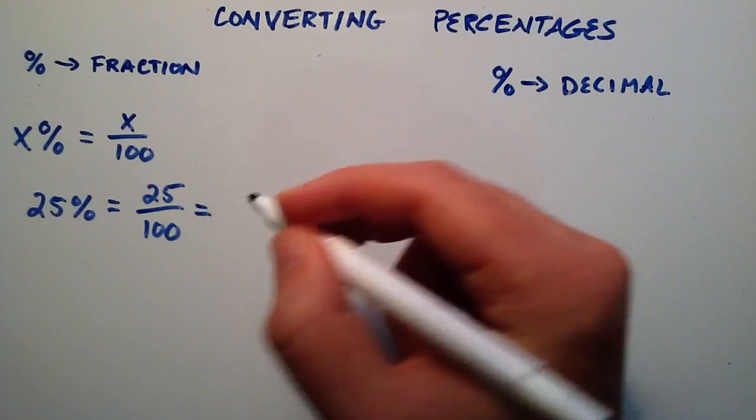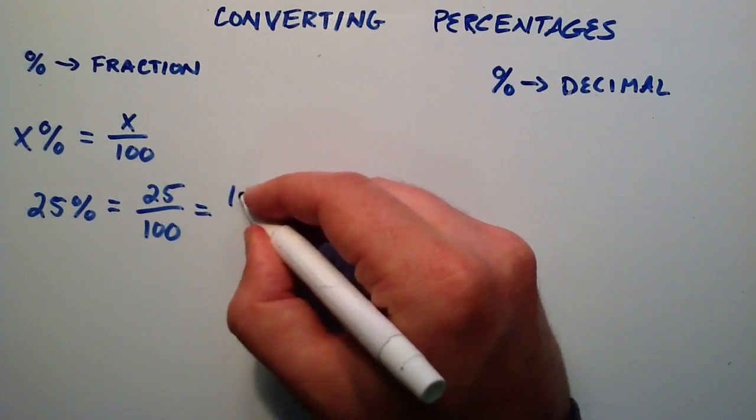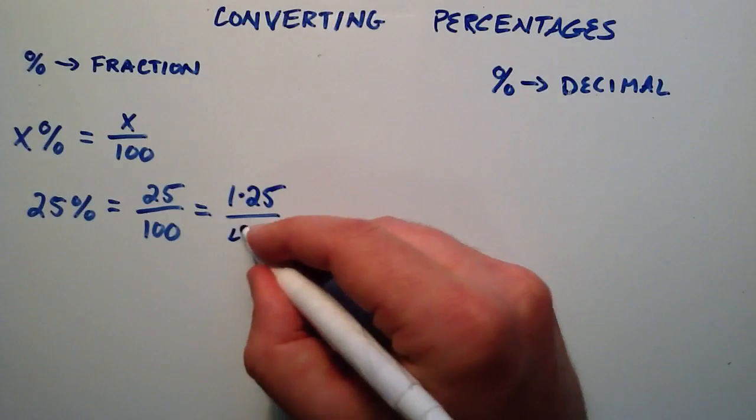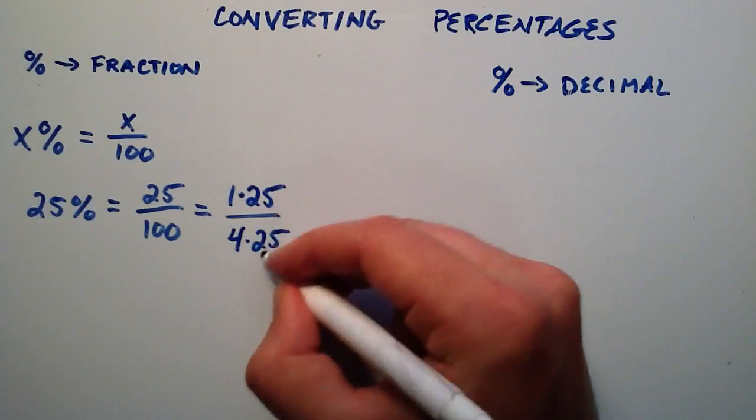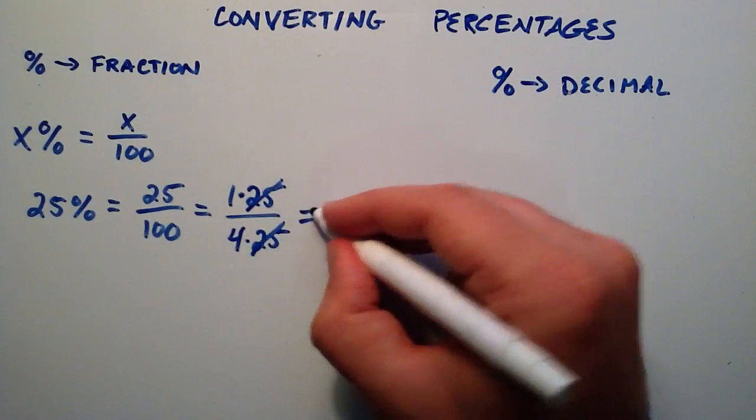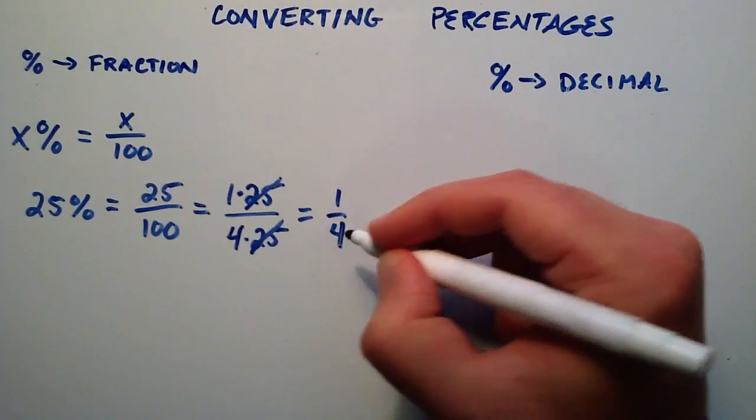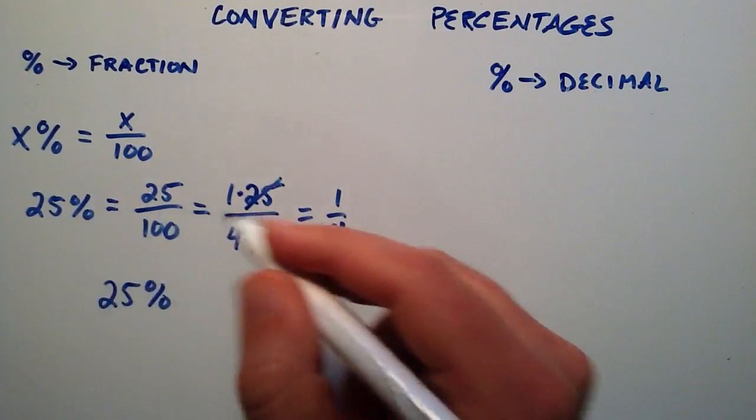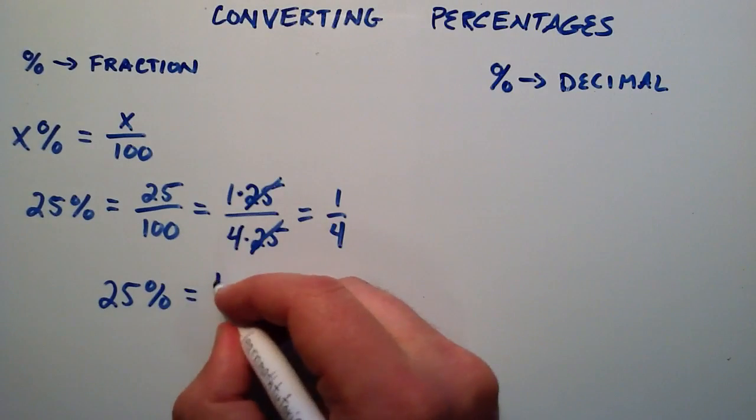And 25 divided by 100 can reduce. 25 is equal to 1 times 25, and 100 is equal to 4 times 25. 25 over 25 cancels, giving us the remaining 1 fourth as our fraction. So here we've shown that 25 percent can be rewritten as a fraction and it's equal to the fraction 1 fourth.